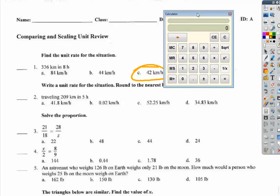Traveling 209 kilometers in 5 hours, kilometers divided by hours. This is 209 divided by 5, right here.